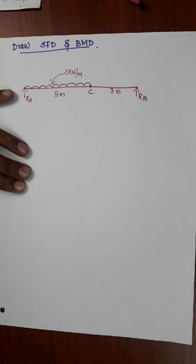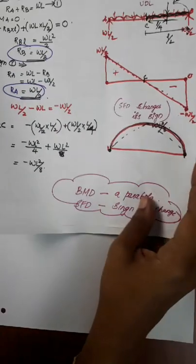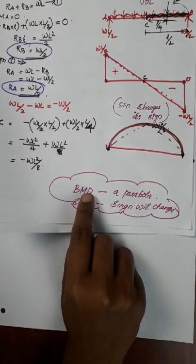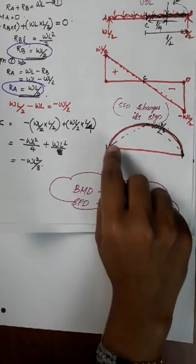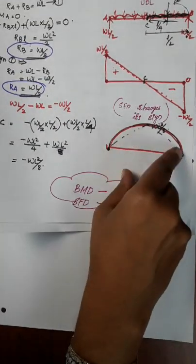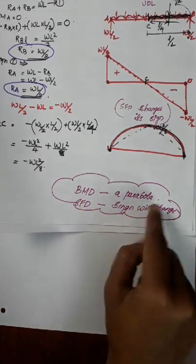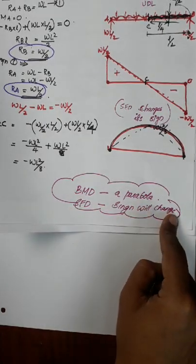In the UDL, we are working on two things. In a bending moment diagram, the bending moment diagram is a parabolic shape. Two: the SFD sign changes.